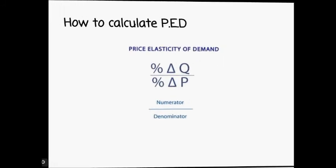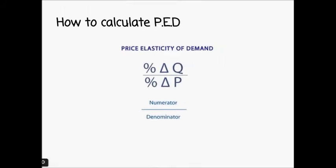So how can we calculate PED? In your exam they might say there has been a 10% increase in demand for PlayStations and a 10% decrease in price. We use this formula: percentage change in Q (delta being quantity) over percentage change in price — that is the numerator over the denominator. A cool way to remember this is 'Q before you pay' — Q for quantity before you pay.